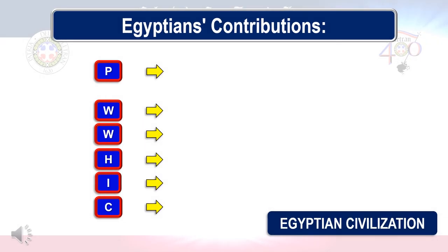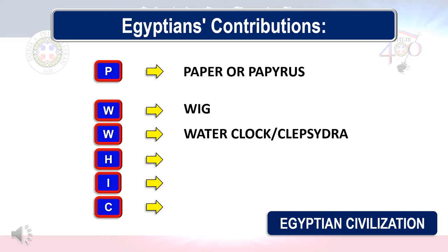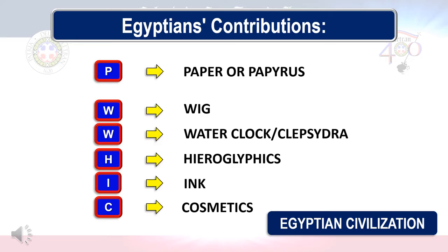Let's now proceed to Egyptian contributions. Just remember the acronym P-WIC: P stands for Paper or Papyrus, W stands for Wig, W stands for Waterclock or Clepsydra, H stands for Hieroglyphics, I stands for Ink, and lastly C stands for Cosmetics.